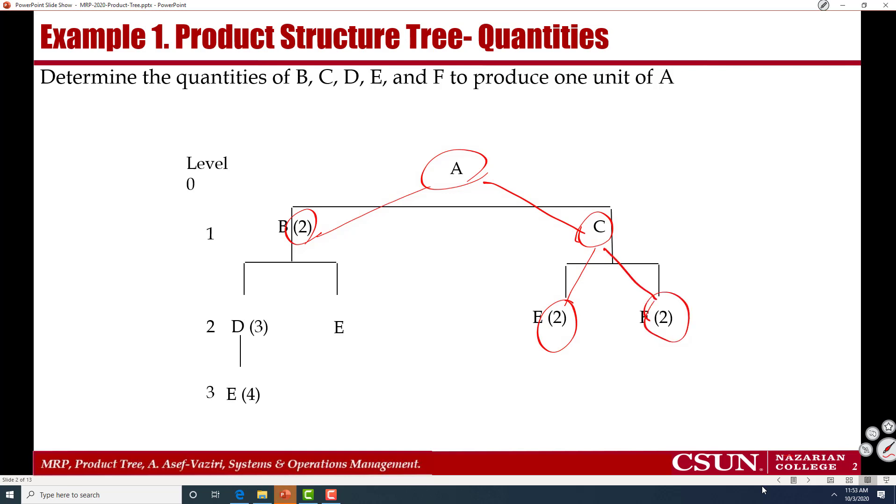For each unit of product B we need 3D. Therefore for two units of product B we need 3 times 2 which is equal to 6. For each unit of product B we need 1 unit of component E. For two of that we need 2E.